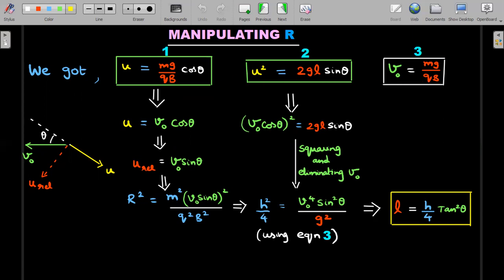You start with u equals mg by qB times cos theta, this was from normal reaction equal to zero condition. This was from work-energy theorem, and the third one was from the field transformation. If you carefully observe, the mg by qB factor is the same, so I'll substitute the value of v naught here.